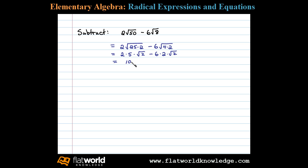This leaves us with 10 times the square root of 2 minus 12 times the square root of 2. At this point we have what are called like radicals. 10 square root of 2 minus 12 square root of 2 equals negative 2 square root of 2.